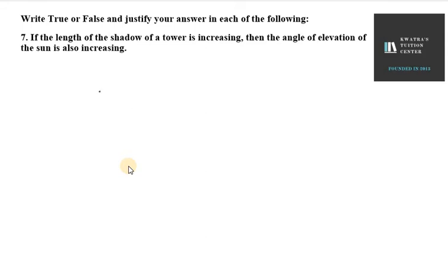So first of all, we will make a tower. This is my tower. Now in this case, it says that if the length of the shadow of a tower is increasing, if its shadow is increasing, where is our shadow? On the x-axis. This is our shadow.